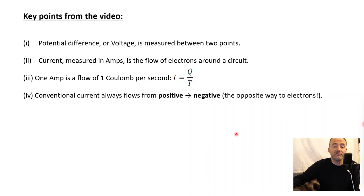We saw that the potential difference of voltage must be measured between two points, and it's measured in volts. Current, measured in amps, is the flow of electrons around a circuit. We saw that one amp is a flow of one coulomb per second. So I equals Q over T, where Q is the charge measured in coulombs, T is time, and I is our current measured in amps. And finally, we said that conventional current always flows from the more positive side of an energy source to a more negative side of an energy source.